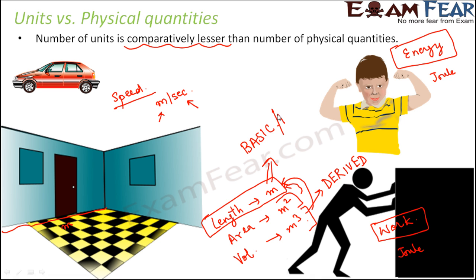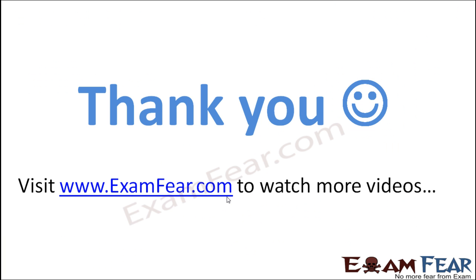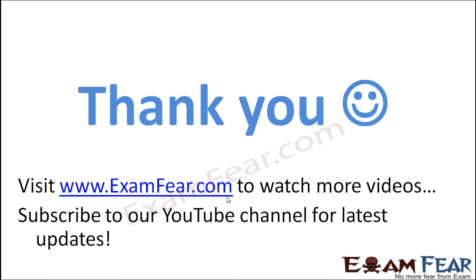Basic units are also called fundamental units. Around seven fundamental units exist, and all other units are derived from these. That is why the number of units is lesser than the number of physical quantities. Please do not worry about terms like speed, energy, and work — these are physical quantities you will learn about in higher classes. Thank you. Please visit examfear.com to watch more educational videos, and don't forget to like and subscribe to our YouTube channel for latest updates.